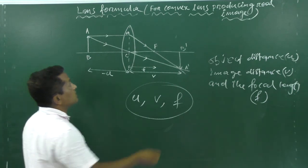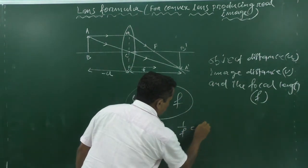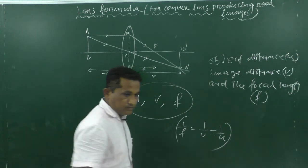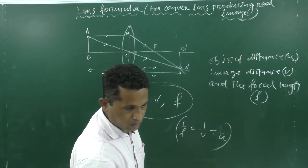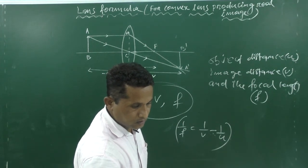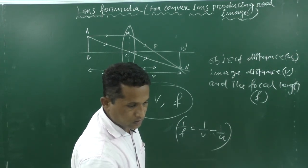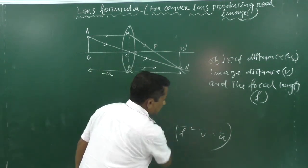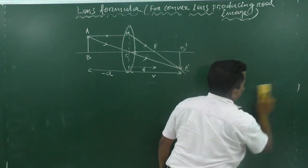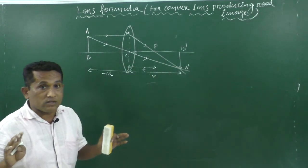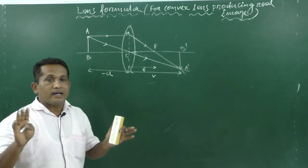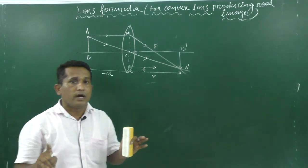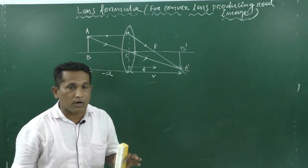The lens formula we will derive is 1/f = 1/v − 1/u. We will use the concept from 10th class, which is triangle similarity. If you remember only that one concept, you can easily derive the lens formula.